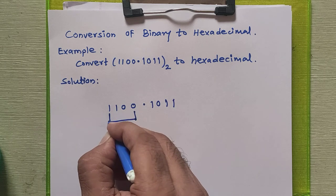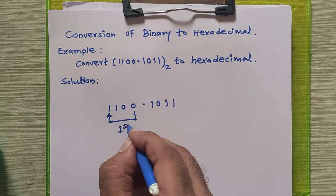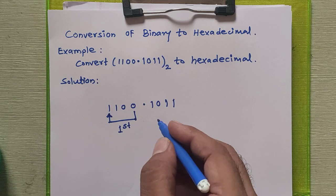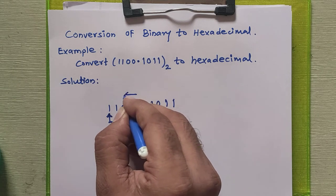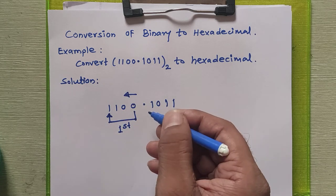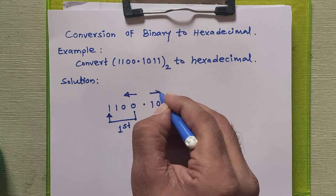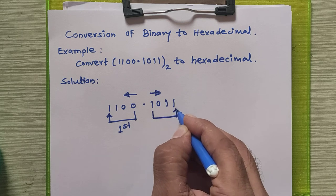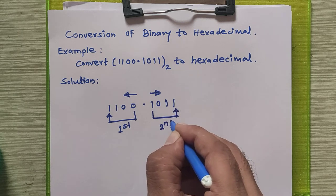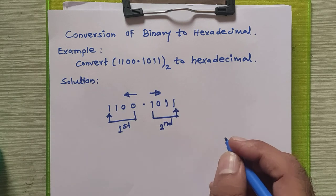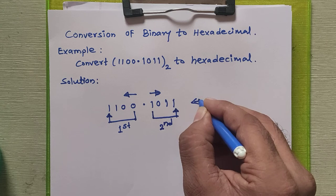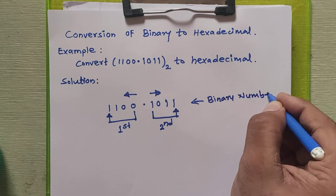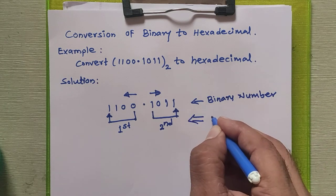For the integral part, we form a group of four binary bits — this is our first group and there are no further bits remaining, so there is only one group for the integral part. Now moving to the fractional part, we form a group of four binary bits — this is the second group. These are the groups of four binary bits formed from the original binary number.